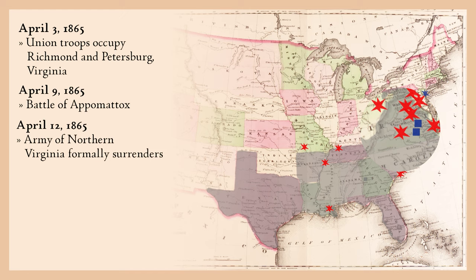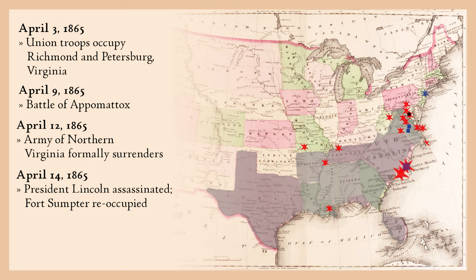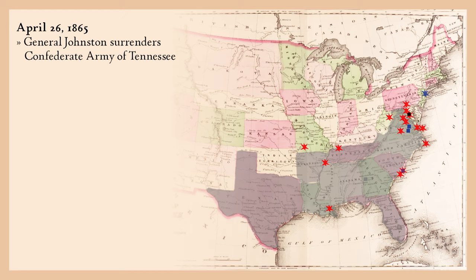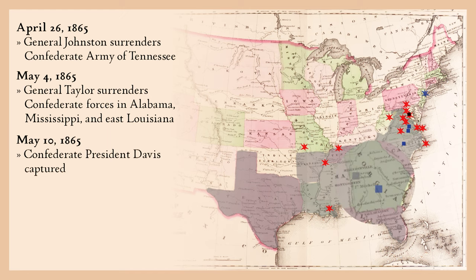April 14, 1865 — President Abraham Lincoln is assassinated by actor John Wilkes Booth at Ford's Theater in Washington, D.C. On the same day, Fort Sumter, South Carolina is re-occupied by Union troops. April 26 — General Joseph Johnston signs the surrender document for the Confederate Army of the Tennessee near Durham, North Carolina. May 4 — General Richard Taylor surrenders Confederate forces in Alabama, Mississippi, and East Louisiana. May 10 — Confederate President Jefferson Davis is captured near Irwinville, Georgia.